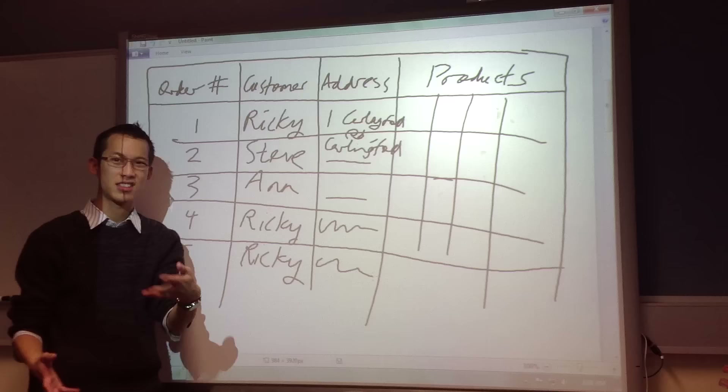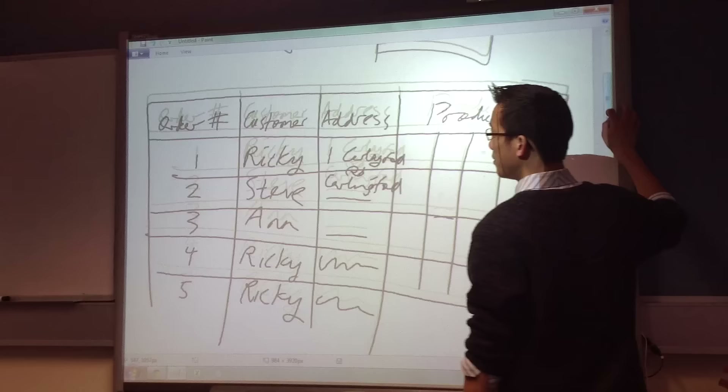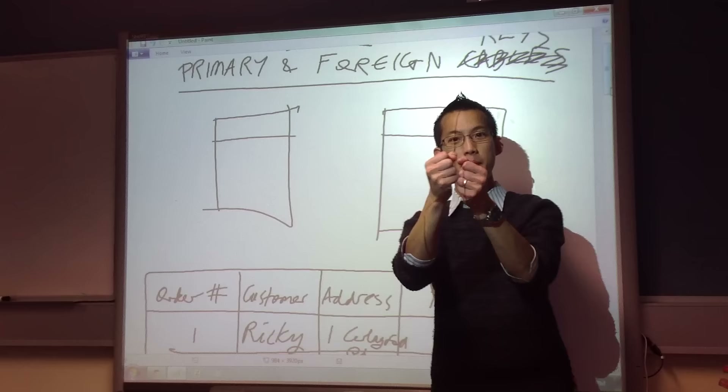So redundant data — not only is it a waste of space, but it can also lead to these kinds of problems. How do I solve the problem? Instead of having one table which just has all my orders in it, I'm going to break apart my flat file into two tables and make it a relational database.